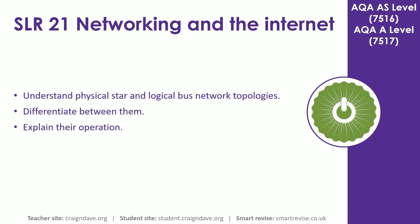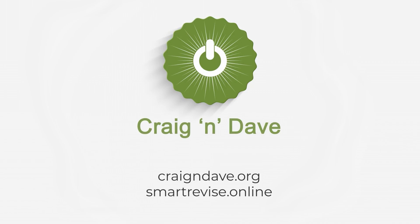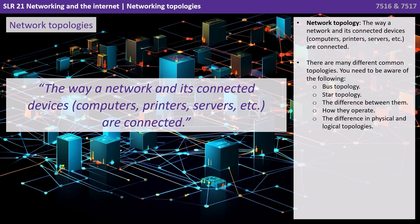In this video we look at both the physical star and logical bus network topologies, differentiating between them and explaining their operation. The term network topology refers to the way a network and its connected devices — such as computers, printers, and servers — are connected. There are many different common topologies you need to be aware of.